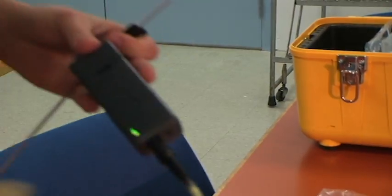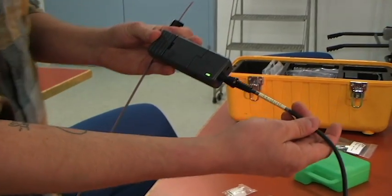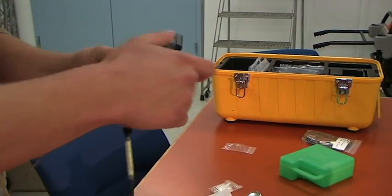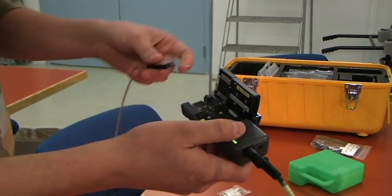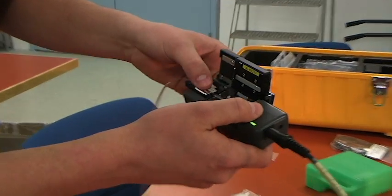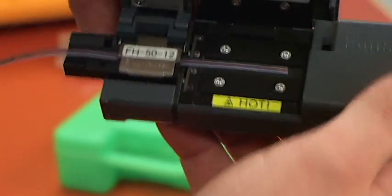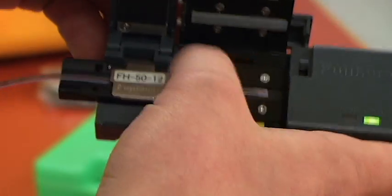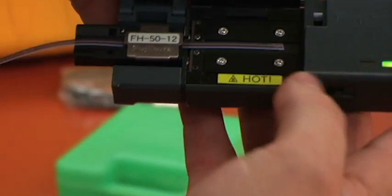We have our HJS02 hot jacket stripper which is powered off of the splicer with the DC11 cord. All we're going to be doing here is inserting our fiber holder into the slot. See here, this is the heating mechanism which will heat that coating and strip it off.